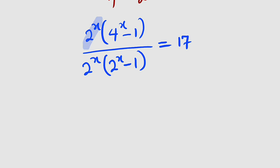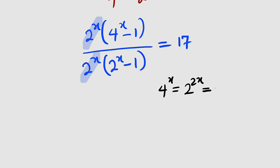If you observe, these are the same, so they will cancel. What we have to the left is just 4 to the power of x minus 1, divided by 2 to the power of x minus 1. But 4 to the power of x can be written as 2 to the power of 2x, and 2 to the power of 2x can also be written as 2 to the power of x, all raised to the power of 2. So instead of 4 to the power of x, we can write it as 2 to the power of x, all to the power of 2.